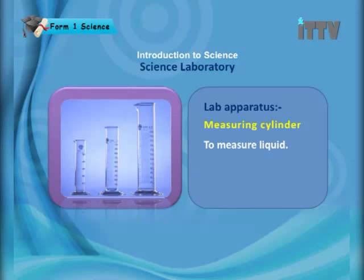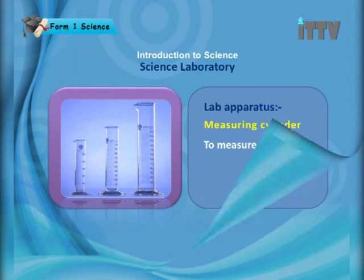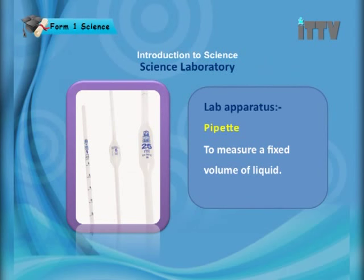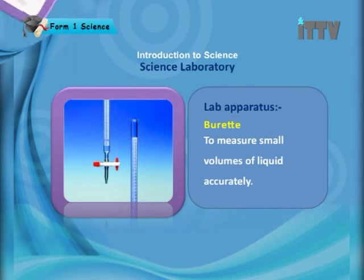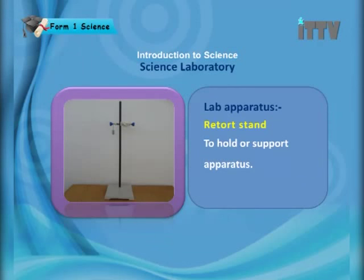The measuring cylinder is used to measure the amount of liquid. A pipette is used to measure a fixed volume of liquid. The burette is used to measure small volumes of liquid accurately. So remember: the measuring cylinder, the pipette, and the burette are all used to measure the volume of liquid needed for an experiment.